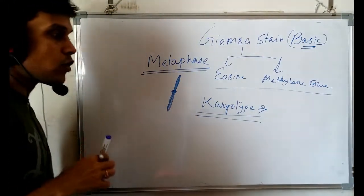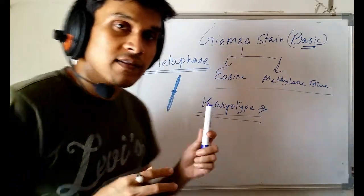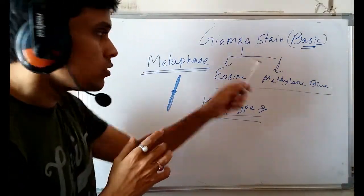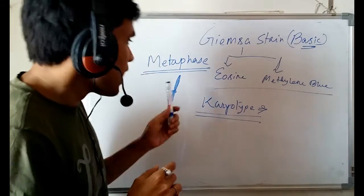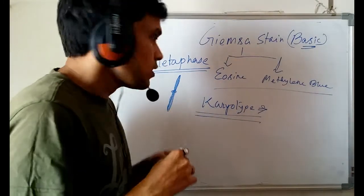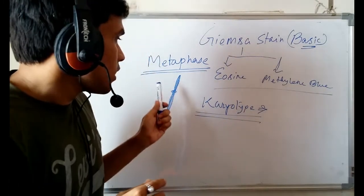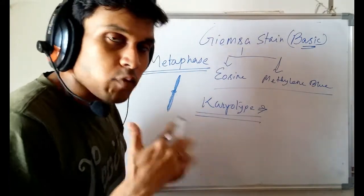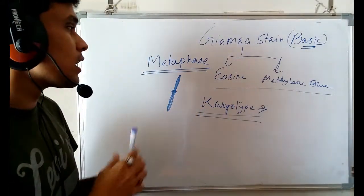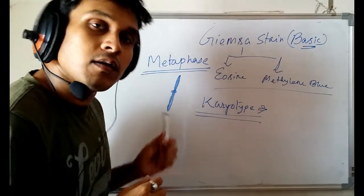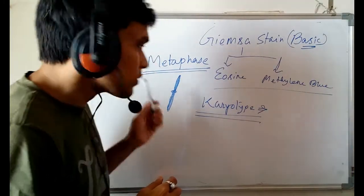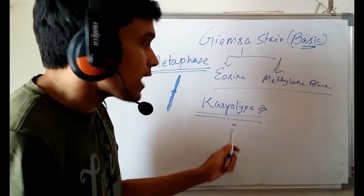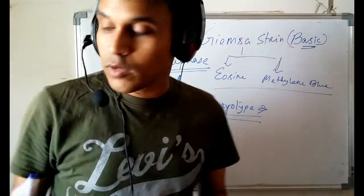So how is the process done? You need to first arrest the cell division at metaphase, before it proceeds to the next phase, which is anaphase. You arrest cell division so that you can get the condensed structure of the chromosome from the metaphase state, and then use G-staining to get the karyotypic image or karyogram.